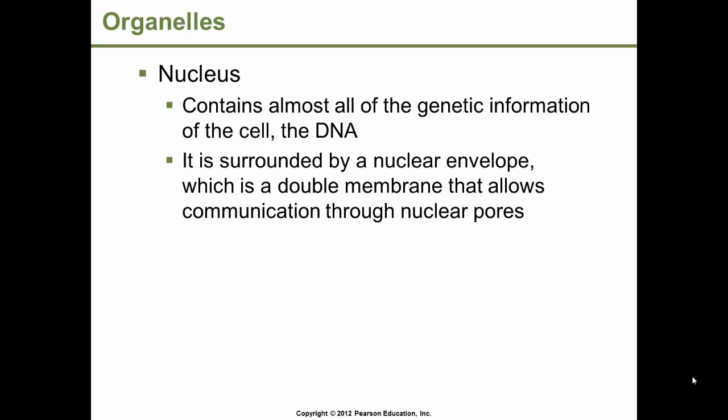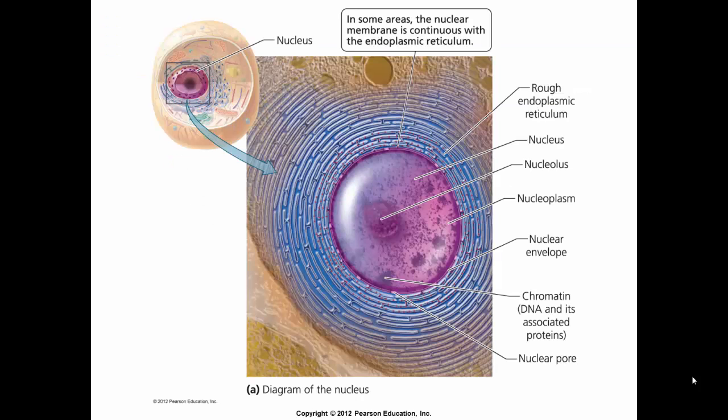The nucleus contains almost all of the genetic information of the cell — the DNA. It's surrounded by a nuclear envelope, which is a double membrane that allows communication through the nuclear pores. This shows a diagram of the nucleus. You have the nucleolus, which is a specialized region within the nucleus. The rough endoplasmic reticulum is continuous with the nucleus. You have the nucleus itself, the nucleolus, the nucleoplasm — which is similar to the cytoplasm within the cell — the nuclear envelope, the chromatin, which is just the dispersed state of DNA and its associated proteins, and the nuclear pores.